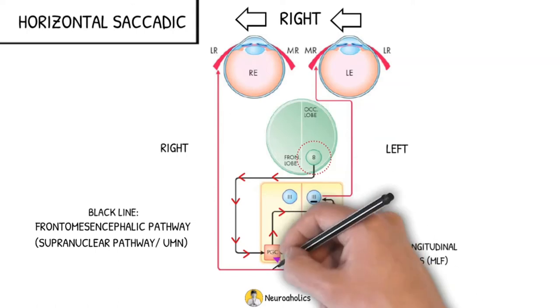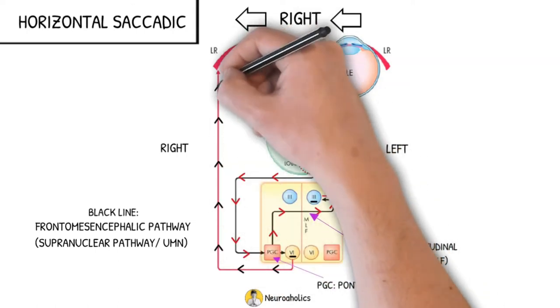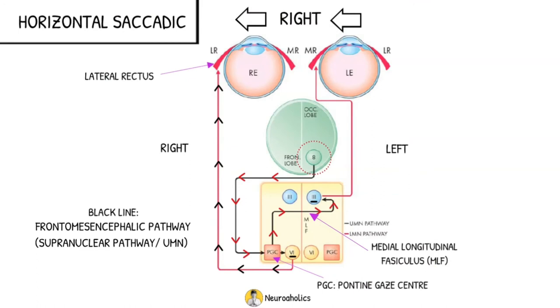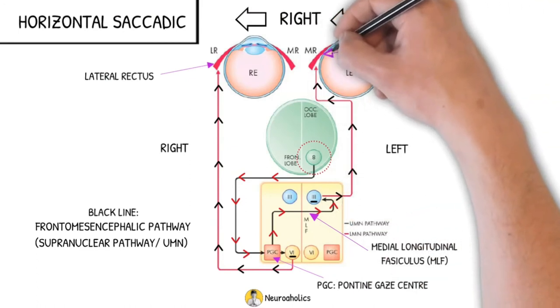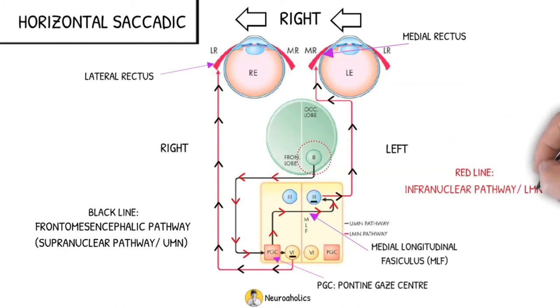From the right 6th nerve nucleus, nerves then pass to the lateral rectus muscle of the right eye. From the left 3rd nerve nucleus, nerves pass to the left medial rectus muscle. These are the infranuclear pathways and both the eyes move to the right.